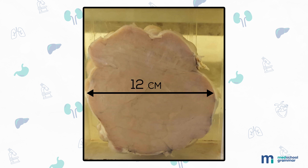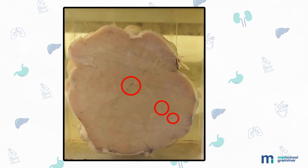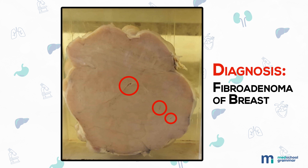Next we have a specimen of mass measuring 12 centimeters in diameter. External surface shows a thin capsule with congestion. Cut surface is pinkish-white, solid, homogeneous, and shows narrow slit-like spaces. There are no areas of necrosis or hemorrhages. This is a specimen of fibroadenoma of breast.